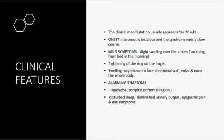Alarming symptoms are usually associated with acute onset and include: headache located over the occipital or frontal region, disturbed sleep, diminished urinary output to less than 400 ml in 24 hours, epigastric pain — acute pain in the epigastrium associated with vomiting and at times hemorrhagic gastritis due to subcapsular hemorrhage in the liver. Eye symptoms include blurring or dimness of vision or at times complete blindness; vision usually regains within 4–6 weeks following delivery.